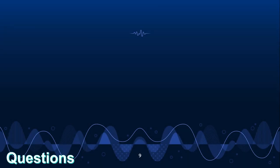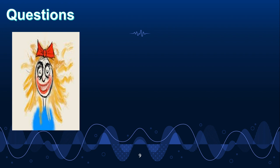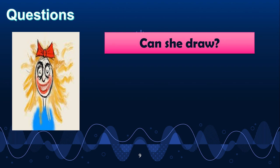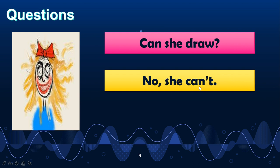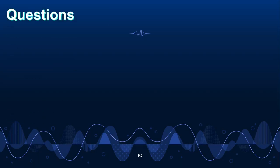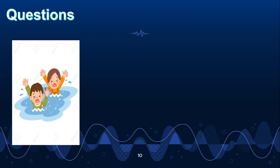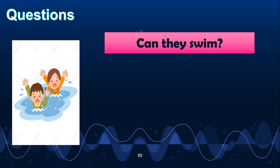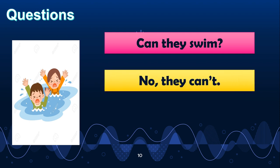Now look at the next picture. It's an ugly doll — an ugly painting. So how will the question be? The question will start with can. Can she draw? Look at the picture — does it show that she can draw? No. So you will write: no, she can't. Next picture — they cannot swim. So the question will be: can they swim? No, they can't.